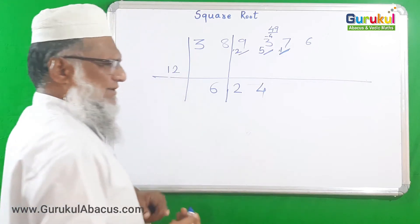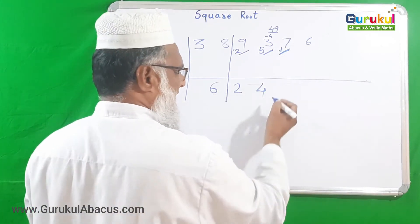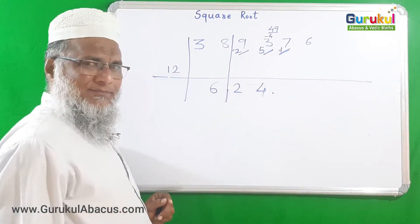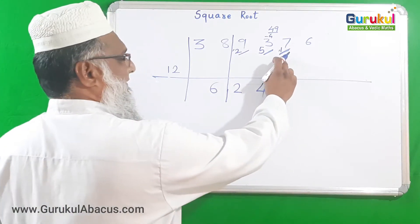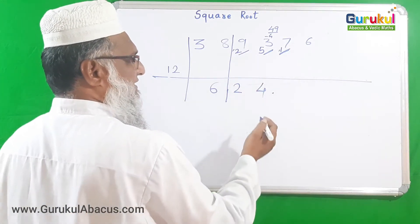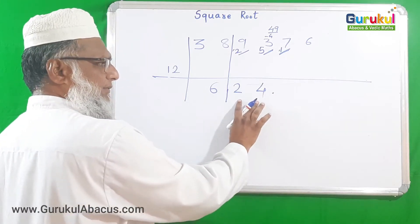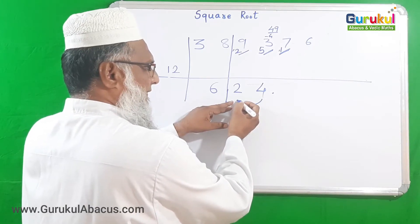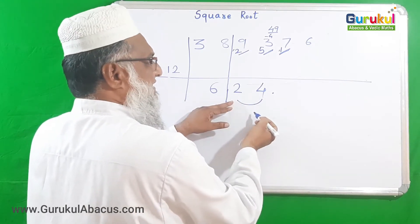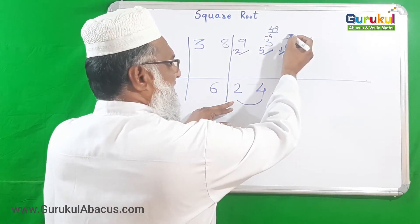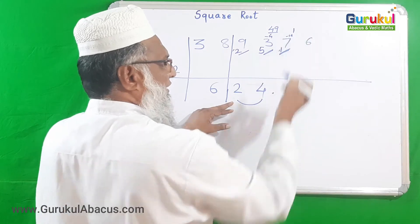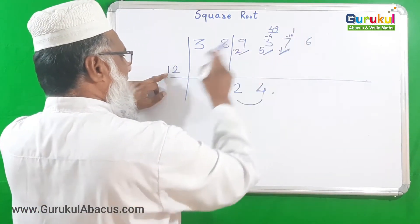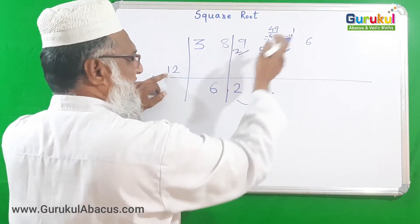I have actually got the answer already — we had three pairs so we get three digits — but I will continue to verify. Placing the decimal point after three digits. Now we have 17. First subtract the dvandva of 24: 4 × 2 doubled is 16. Subtracting 16 from 17 leaves 1.